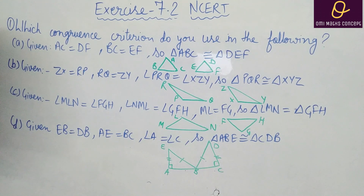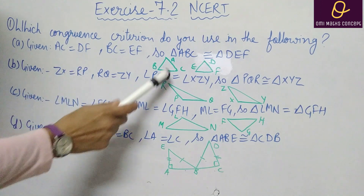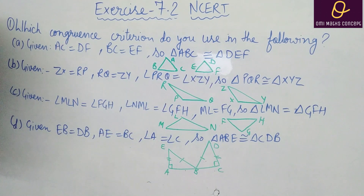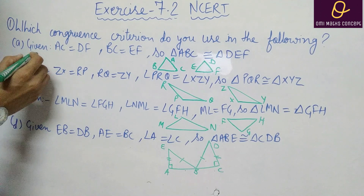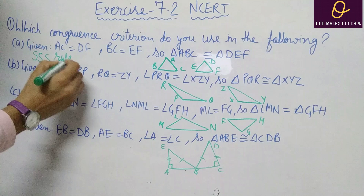Question 1: Which congruence criteria do you use in the following? For the first part, AC is equal to DF, BC is equal to EF, and AB is equal to DE. Since 3 sides are given, we apply the Side-Side-Side (SSS) rule.